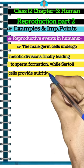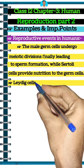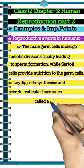While Sertoli cells provide nutrition to the germ cells, Leydig cells synthesize and secrete testicular hormones called androgens.